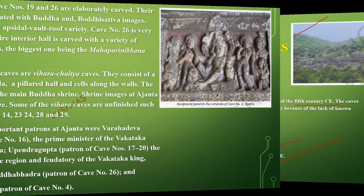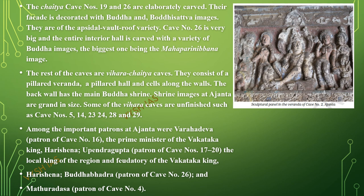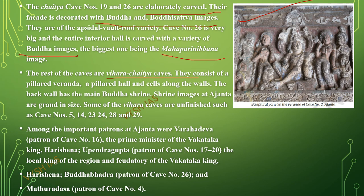Cave numbers 19 and 16 are elaborately carved. This is one of the paintings from the sculptural panels of Ajanta Cave number 2. The facade is decorated with Buddha and Bodhisattva images on the side wall and roof. Cave number 26 is big and the entire interior hall is carved with a variety of Buddha images, the biggest being the Mahaparinibbana image of the Buddha. The remaining caves are vihara and chaitya caves consisting of a pillared veranda, a pillared hall, and cells along the walls, with the main Buddha shrine on the back wall.